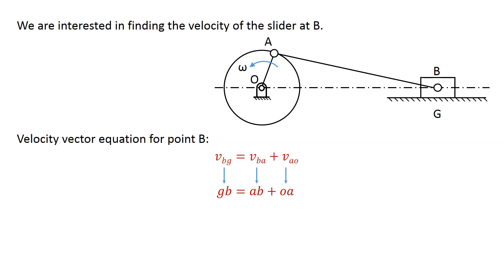To draw the velocity diagram, we will represent velocity of B relative to G by the vector GB, velocity of B relative to A by the vector AB, and velocity of A relative to O by the vector OA.